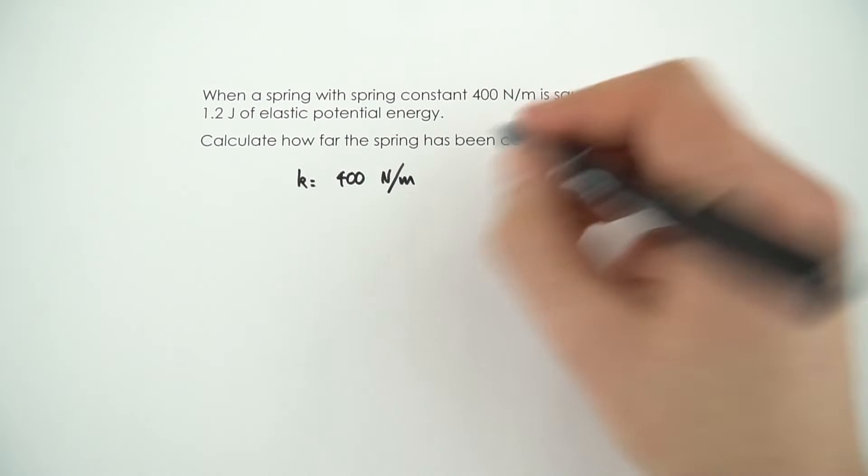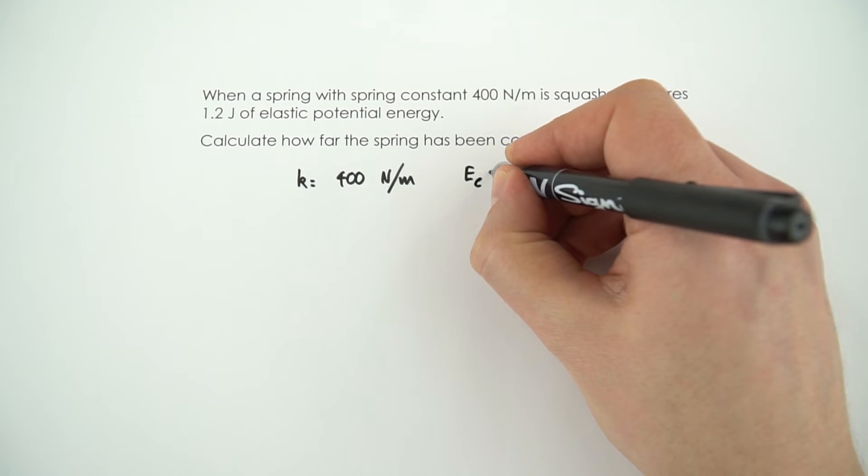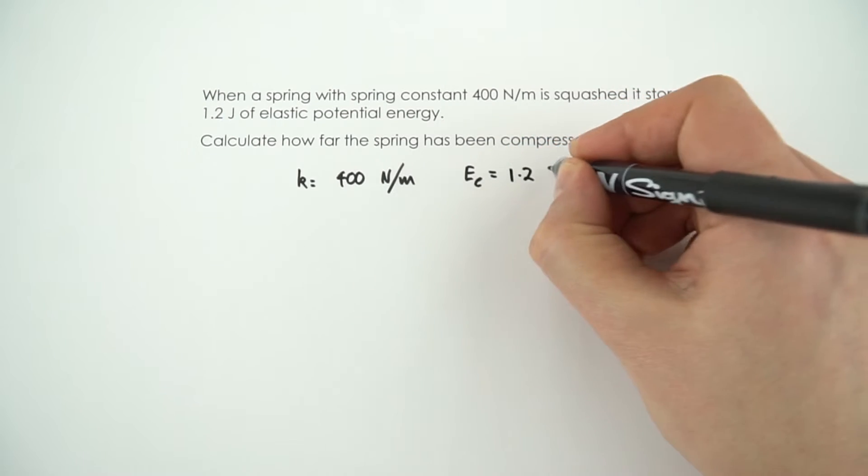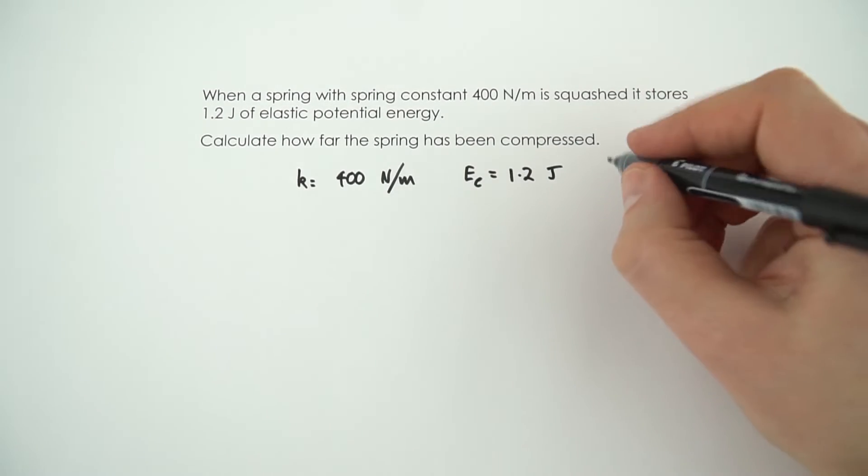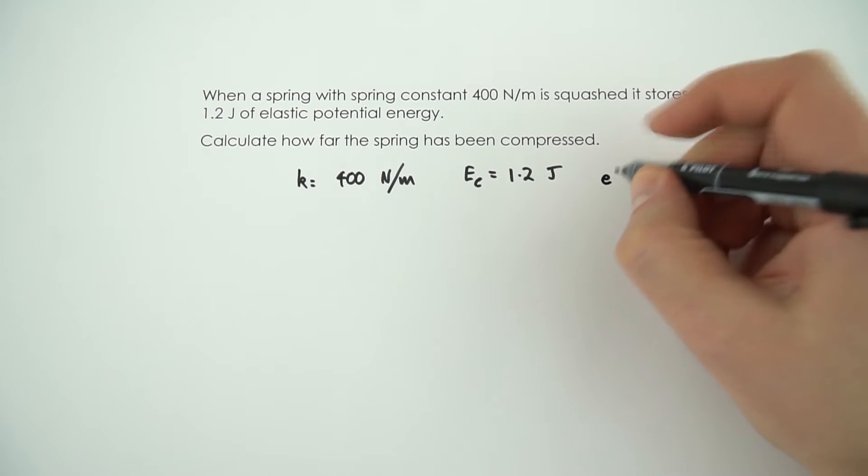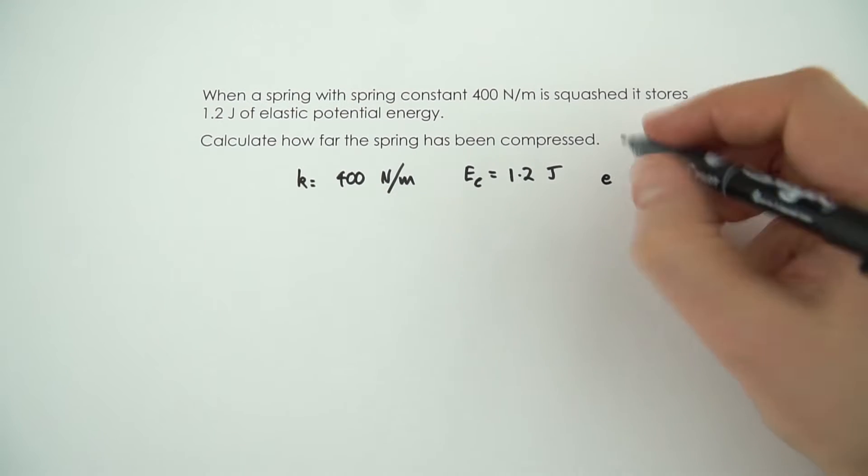And here the energy stored, the elastic potential energy EE, is equal to 1.2 joules. And we want to know how far the spring has been compressed, so even though it's compression we still use the symbol E, and that's our unknown.